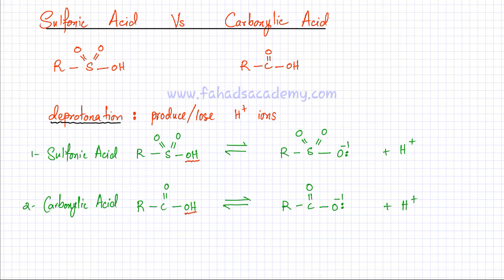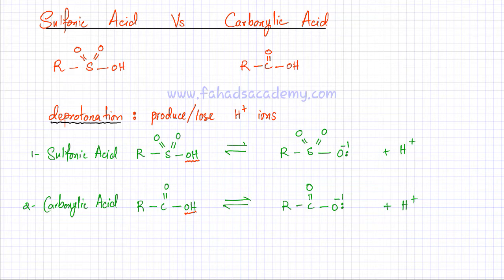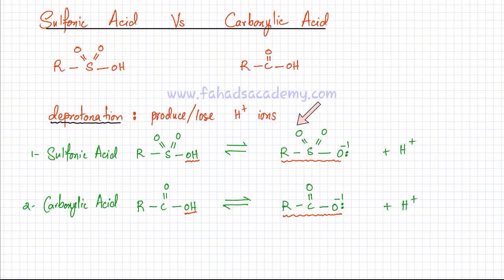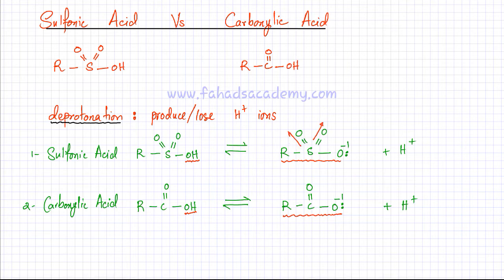Remember, both of these reactions are reversible — it could very easily happen that this H⁺ gets attracted back to this oxygen minus and it would end up forming sulfonic acid again. Now we're going to analyze both anions. You'll notice that in sulfonic acid the sulfur is bonded to two oxygen atoms, forming double bonds with both, and oxygen is very electronegative, so each oxygen tries to pull electrons towards itself.